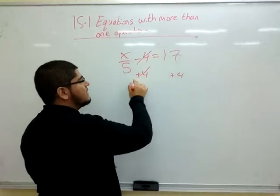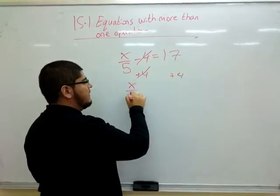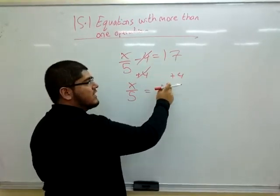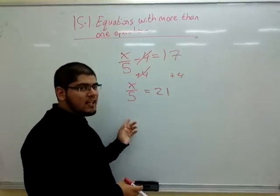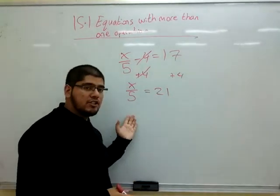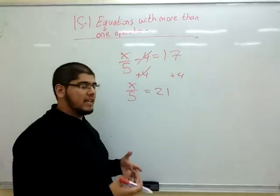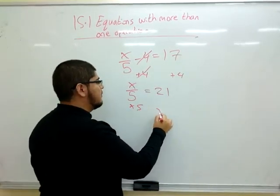That cancels, we're left with x divided by 5 equals 17 plus 4, 21. Now, this is x divided by 5, this is a division operation. The opposite is multiplication. So we need to multiply both sides by 5.